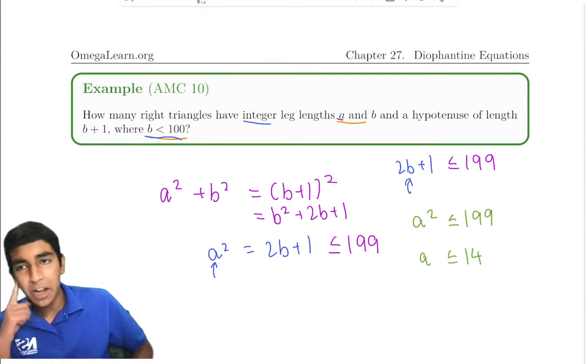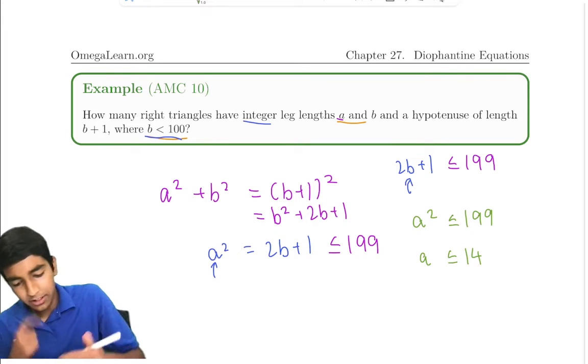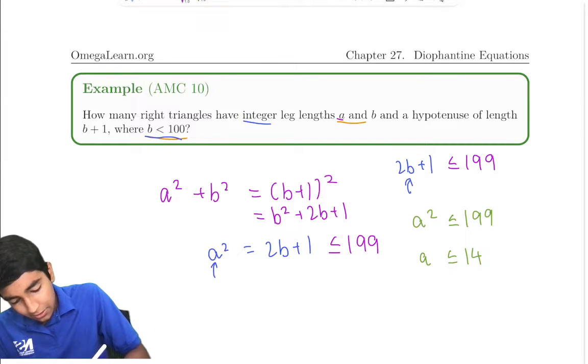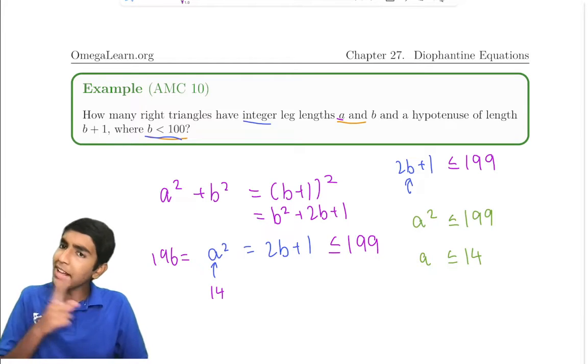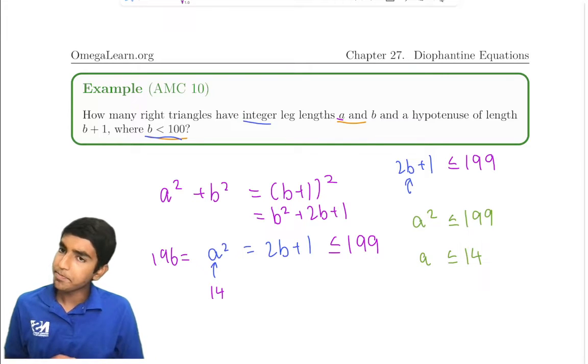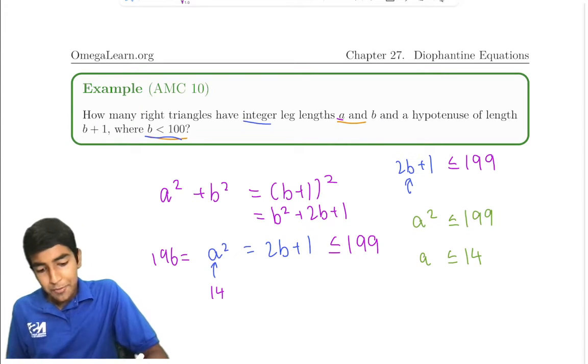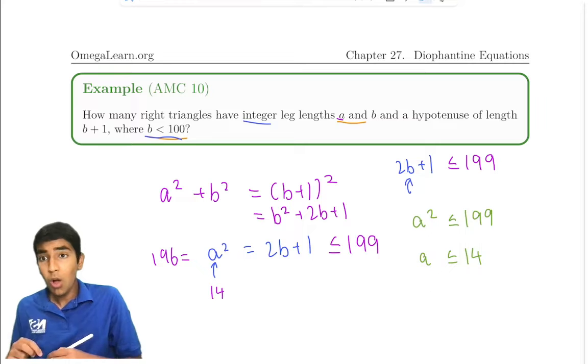Can it be any number 14 or less? Well, let's try some values. So let's say a is 14, and this becomes 196. If b is an integer, can 196 equal 2b + 1? If b is an integer, 2b + 1 is odd.